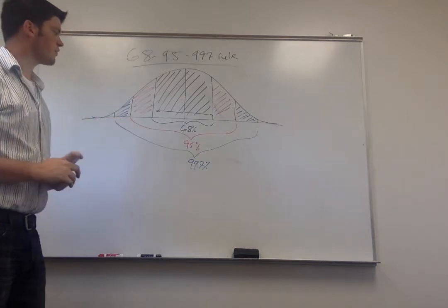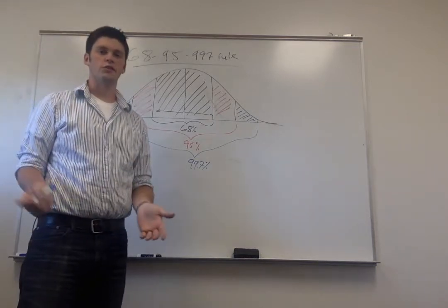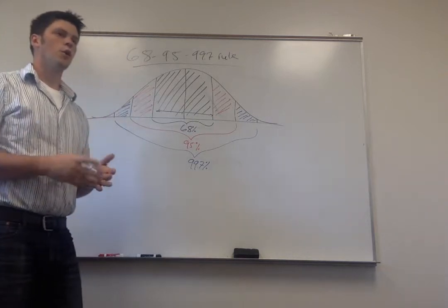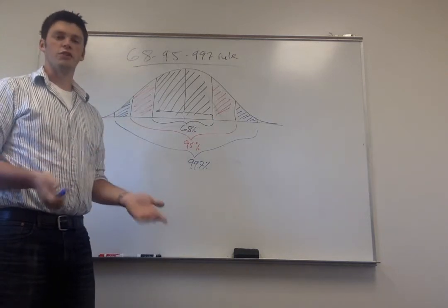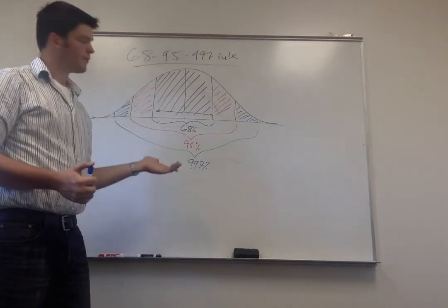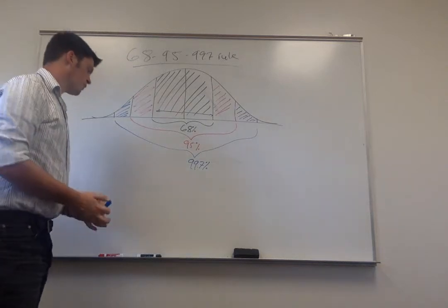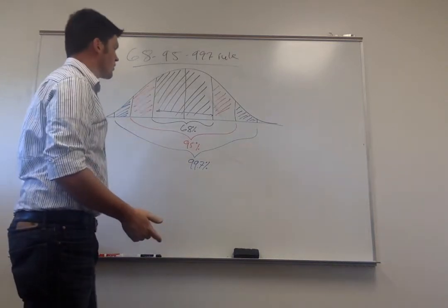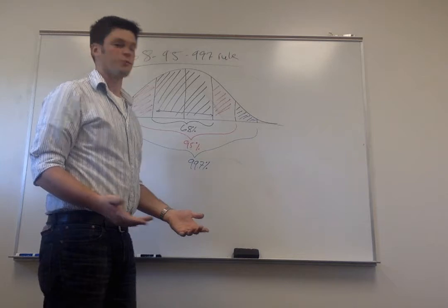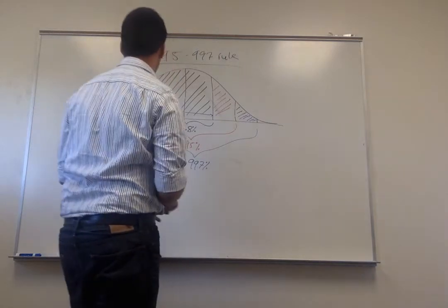That's what the rule tells us, and it always works with normally distributed data. If you don't know that your data is normally distributed, you can't use the rule. But if we do know we have a normal distribution, we can use this rule to start answering some questions.